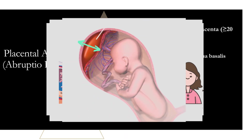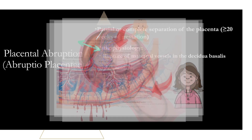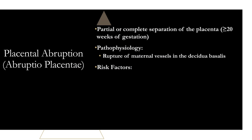The separation can be partial or complete depending on the severity of the bleed. To recap, in placental abruption, vessels in the decidua basalis rupture, bleed, and accumulate, which eventually causes the placenta to separate and peel away. So the next question becomes: why did these vessels rupture in the first place? That takes us to our risk factors.